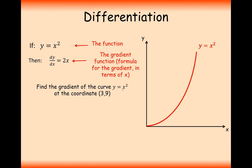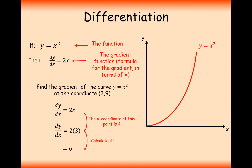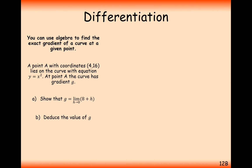So if we want to calculate the gradient of the curve y equals x squared at the coordinate 3, 9, then we just plug in the value x equals 3, and we get the value of 6. So the gradient at x equals 3 is 6.